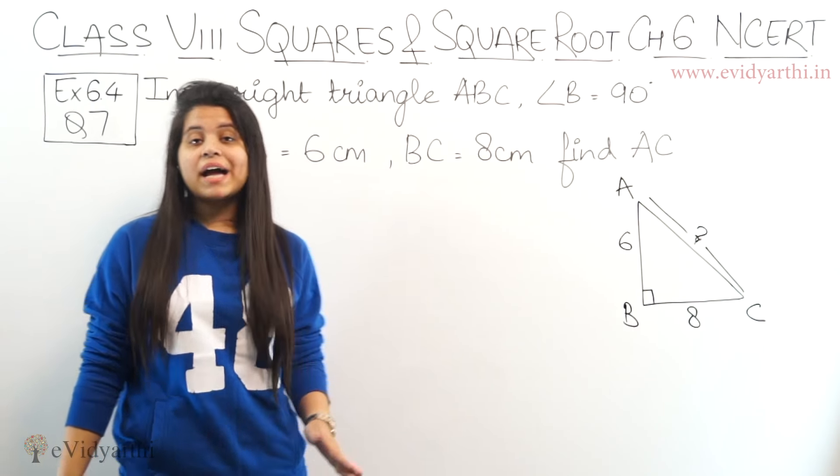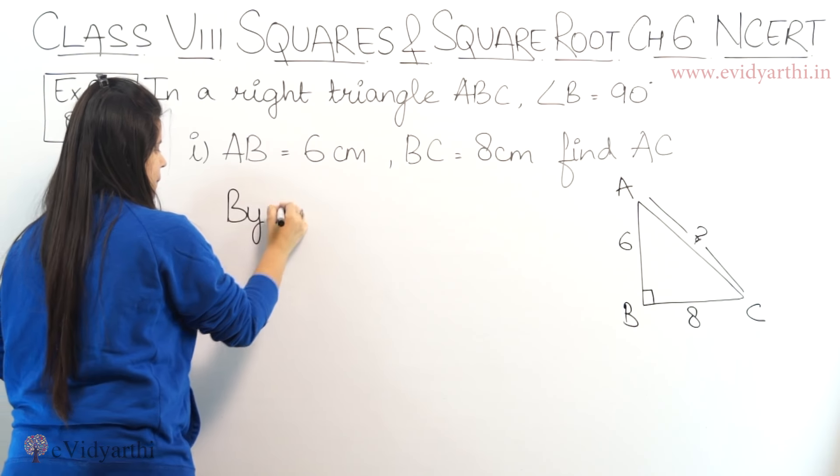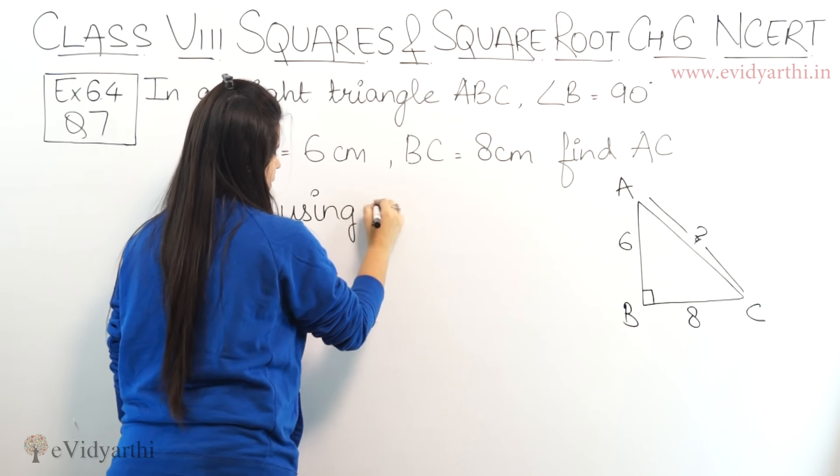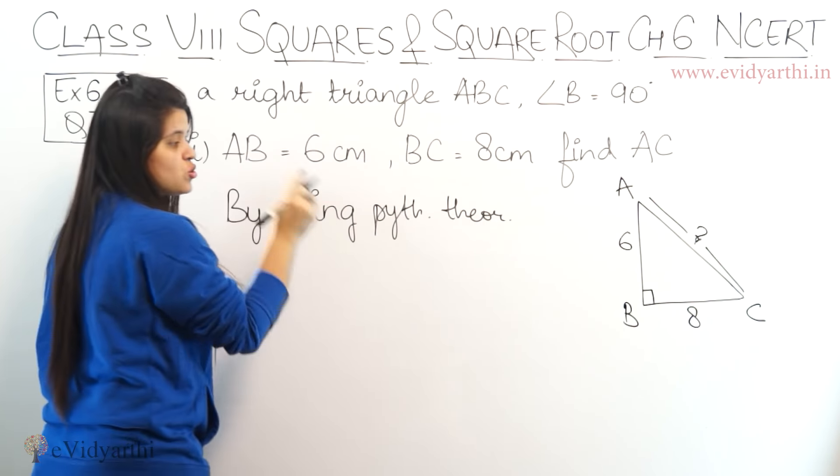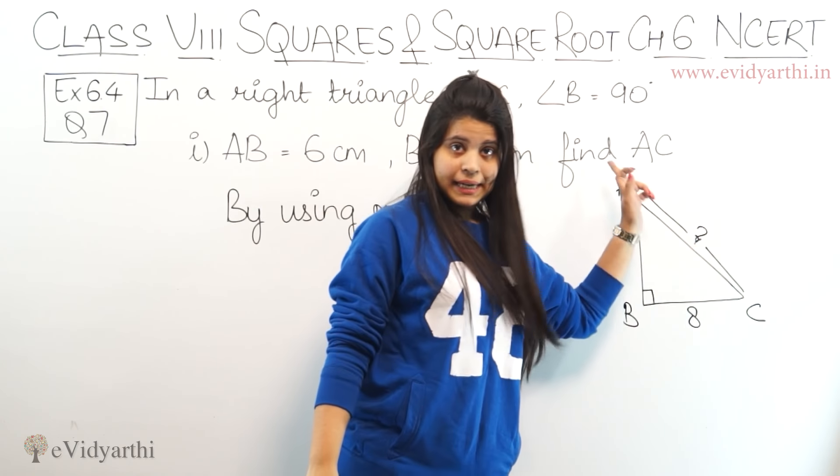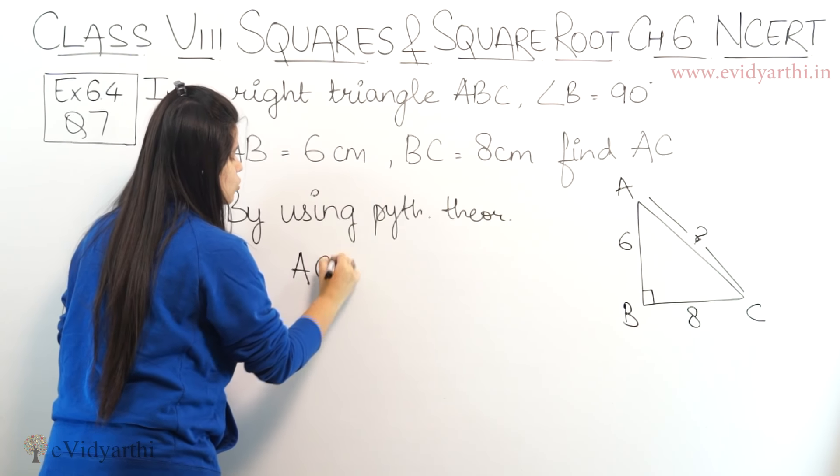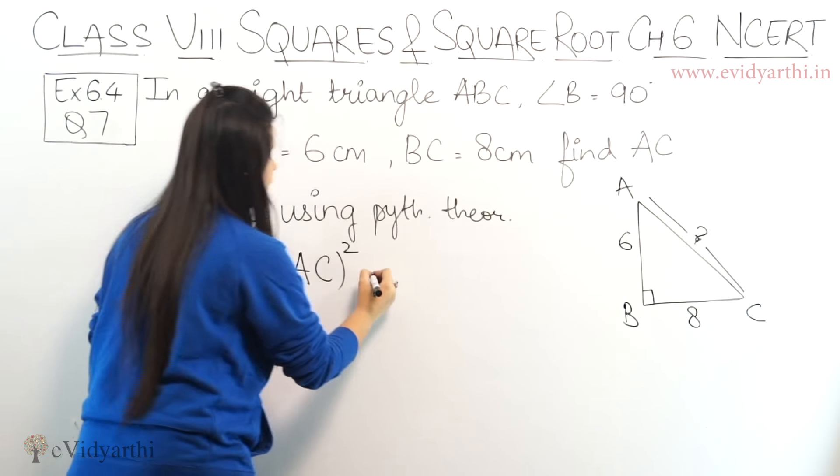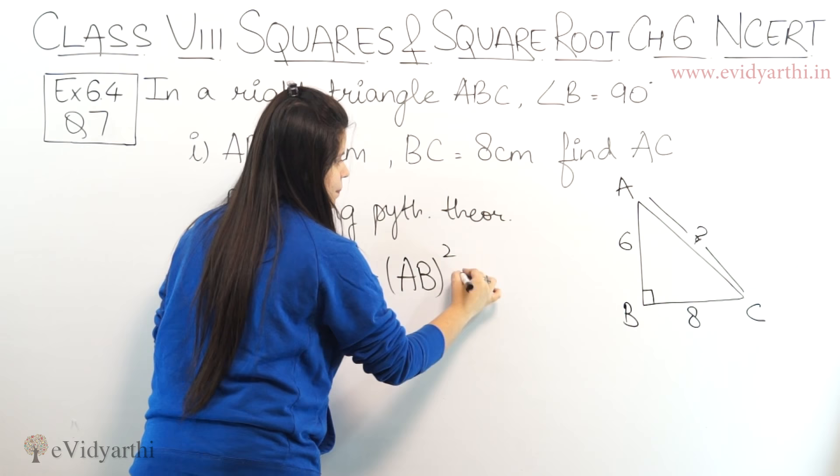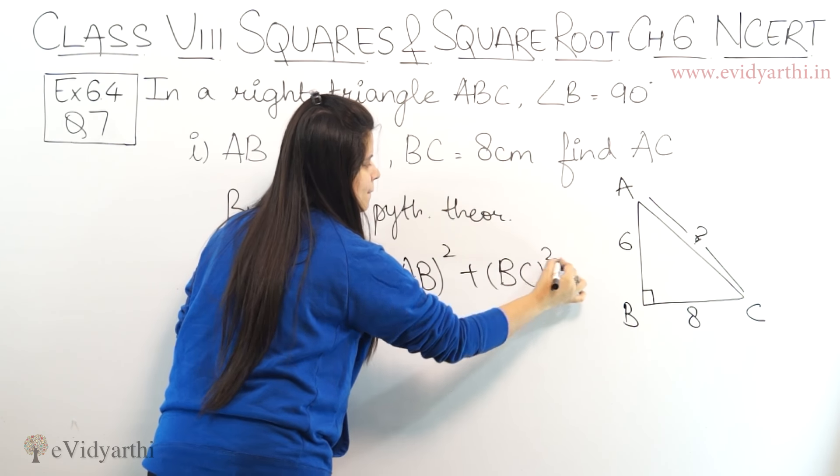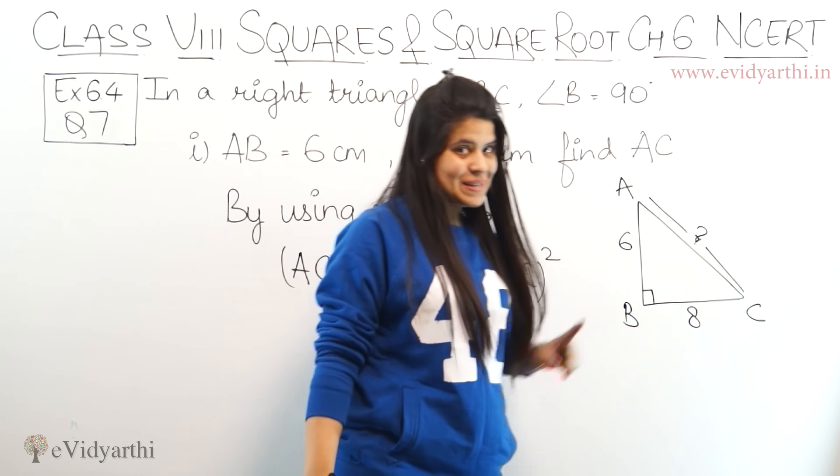In right angle triangle we have Pythagoras theorem. So by using Pythagoras theorem, the hypotenuse is this side. Hypotenuse squared, AC squared, equals to AB squared plus BC squared.